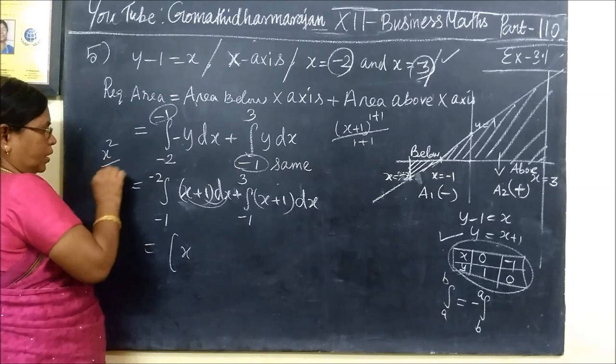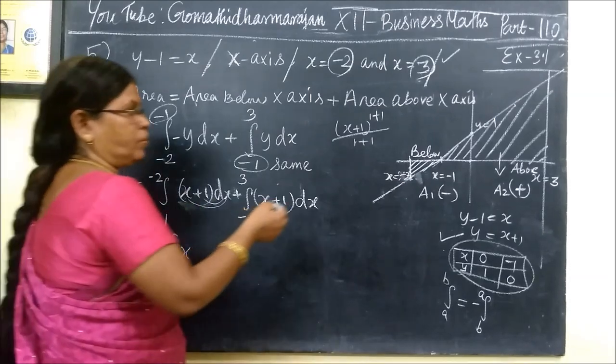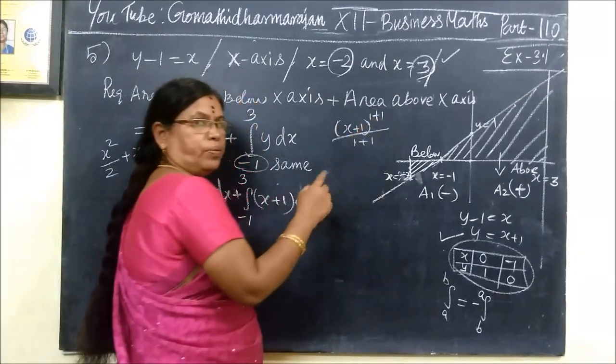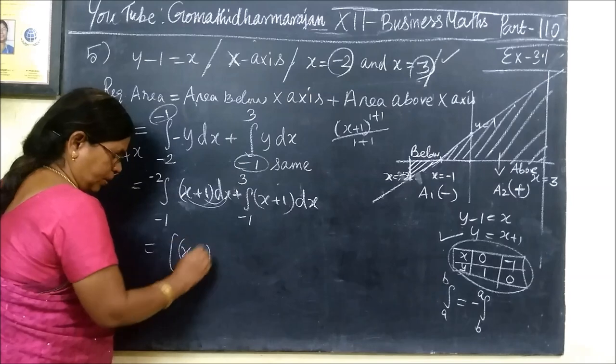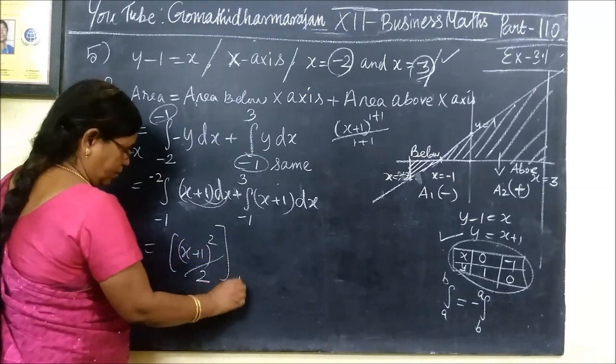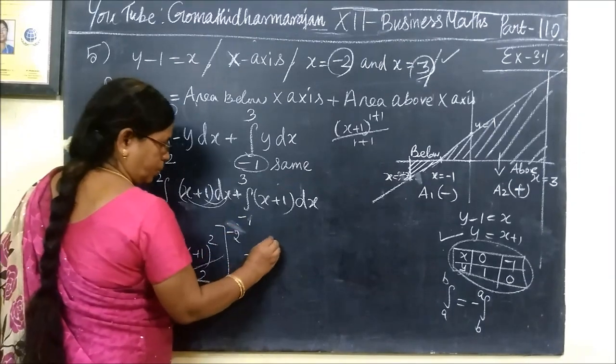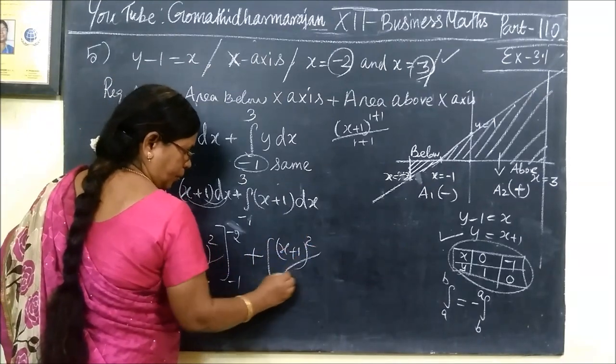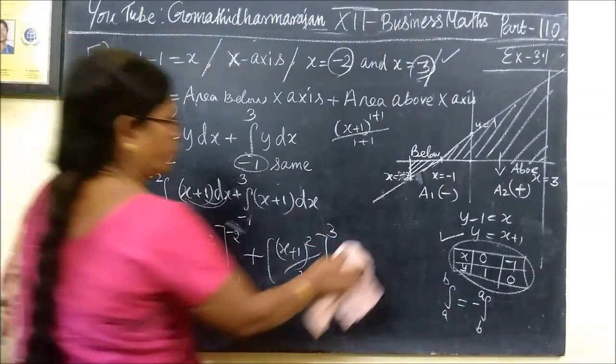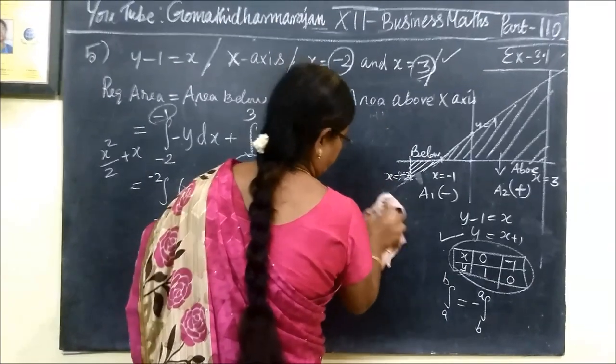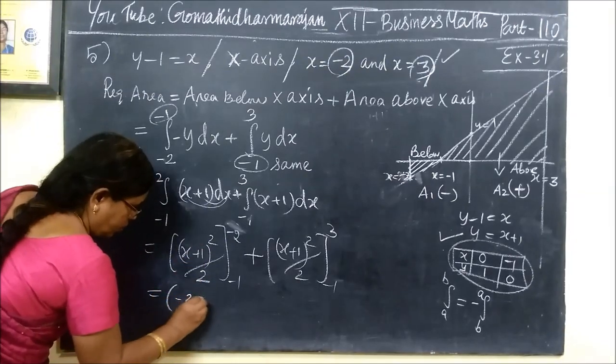The answer is x plus 1 whole squared divided by 2, from minus 2 to minus 1, plus x plus 1 whole squared divided by 2, from minus 1 to 3.